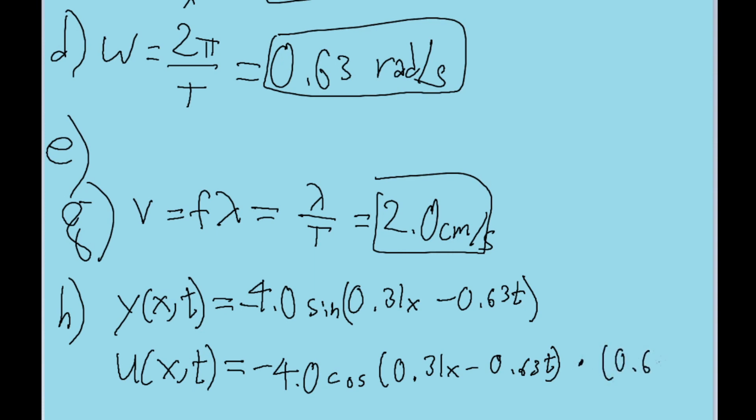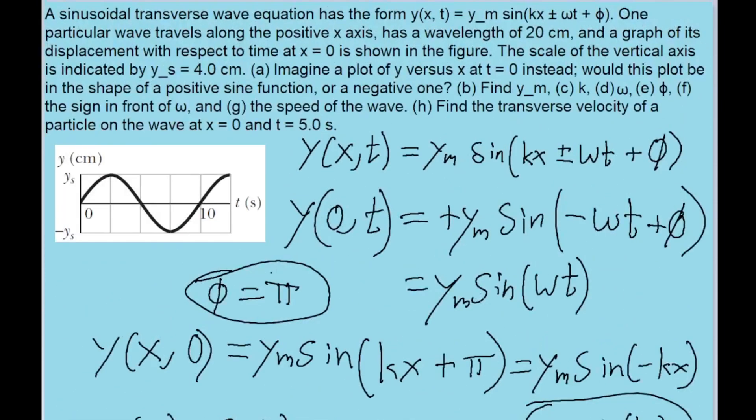And when we take this and we plug in 0 for x and 5.0 seconds for t, then we find a speed of about negative 2.5 centimeters per second. Make sure your calculator is in radians, by the way, when you do that calculation. That's the transverse velocity. So that's the final part of the problem.